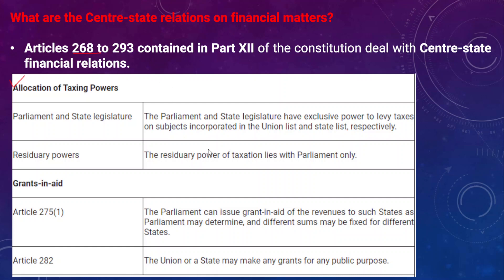With respect to residuary powers, the union parliament has full authority to make any legislation on subjects in the residuary list. The residuary power of taxation also lies with parliament. Grants in aid are also part of the financial relation between the union government and states, governed by Article 275, Clause 1.